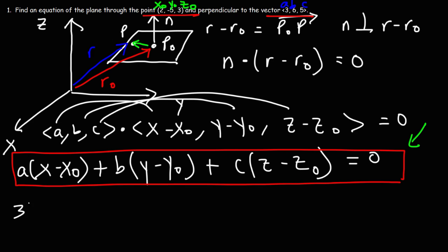So let's replace A with 3, X0 with 2. And then B is 6. And then we're going to replace Y0 with negative 5. And then C is 5, and Z0 is 3.